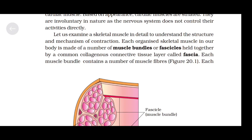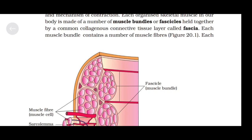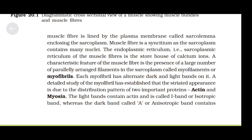Let us examine a skeletal muscle in detail to understand its structure and mechanism of contraction. Each organized skeletal muscle in our body is made of a number of muscle bundles or fascicles held together by a common collagenous connective tissue layer called fascia. Each muscle bundle contains a number of muscle fibers. Each muscle fiber is lined by a plasma membrane called sarcolemma enclosing the sarcoplasm. Muscle fiber is a syncytium as the sarcoplasm contains many nuclei. The sarcoplasmic reticulum of the muscle fiber is the storehouse of calcium ions. A characteristic feature is the presence of a large number of parallelly arranged filaments in the sarcoplasm called myofilaments or myofibrils.